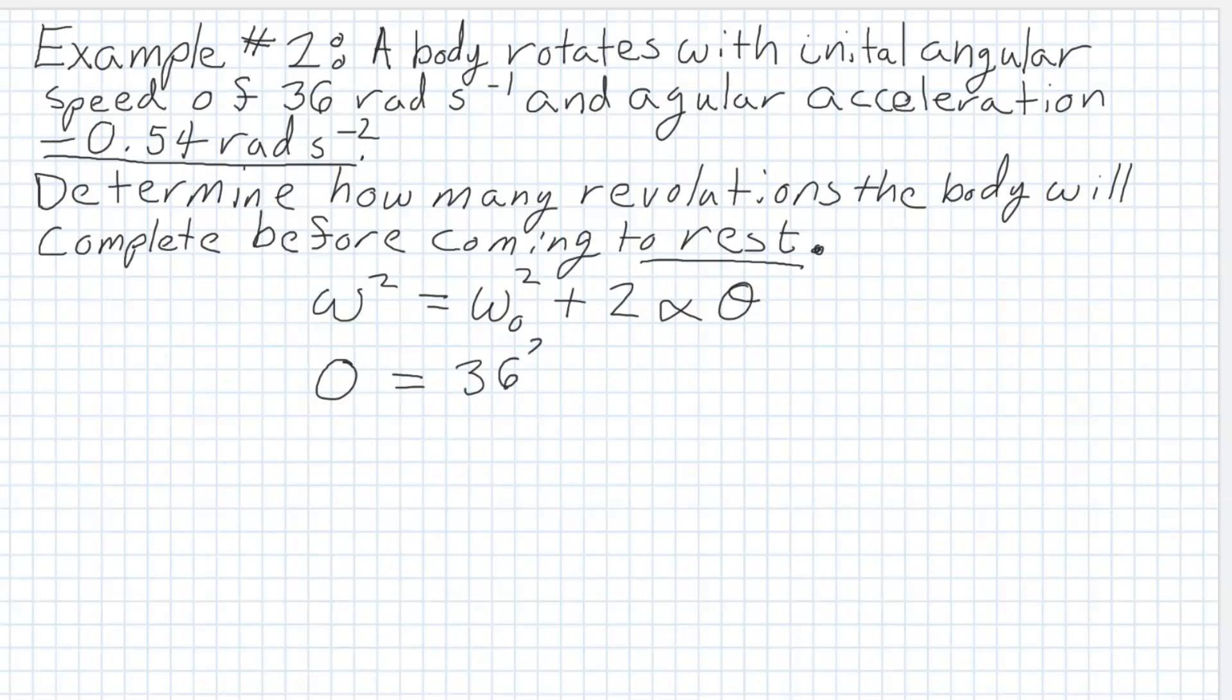Our final angular speed is 0 and our initial angular speed is 36 plus 2 times negative 0.54 radians per second squared for angular acceleration, and we're trying to find theta. I solve for my angular displacement and I get 1,200 radians.